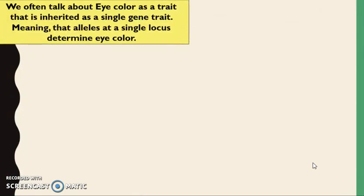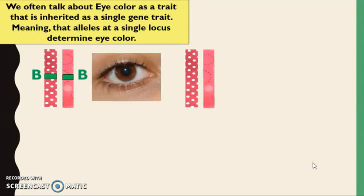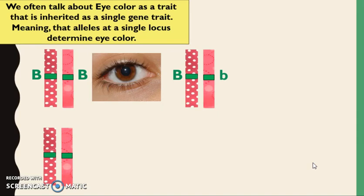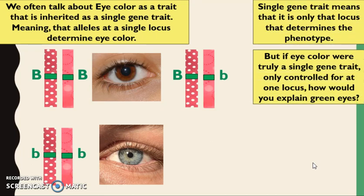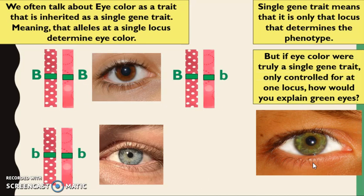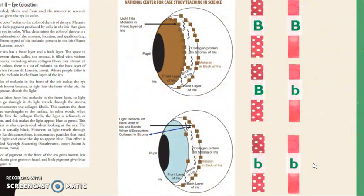Let's look at a common example used in genetics, which is eye color. We often talk about eye color as a single gene trait at one particular locus. But what about all the variations in eye color we see, like green eyes or hazel eyes or different shades of brown or blue? Eye color is actually determined by more than one locus, more than one gene.